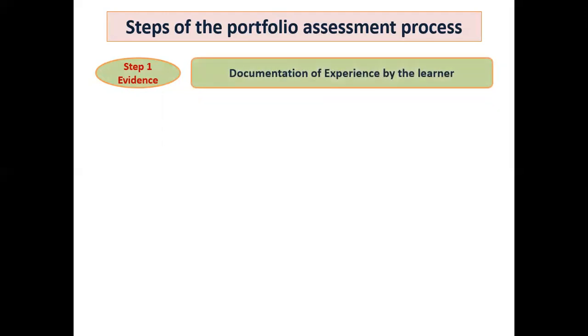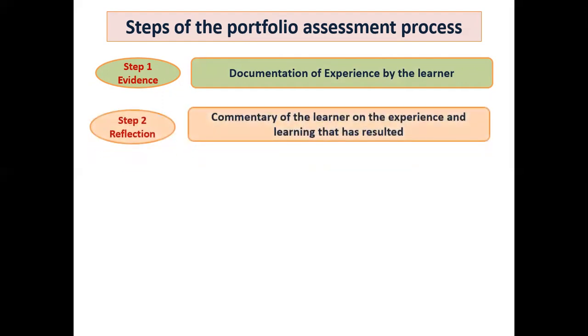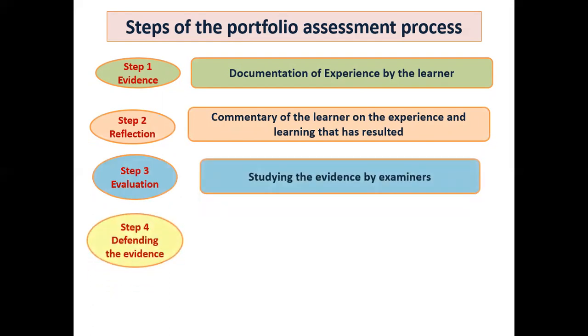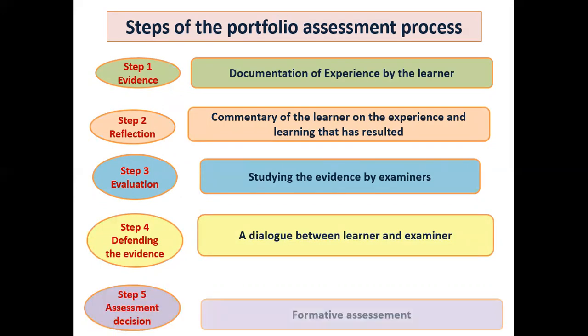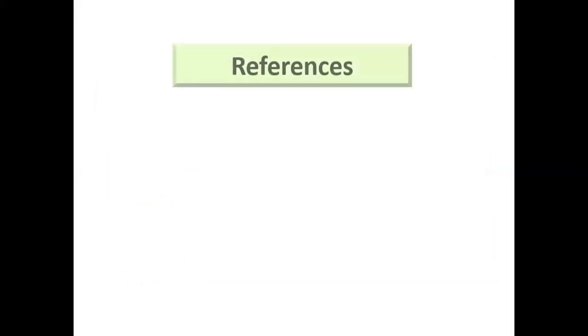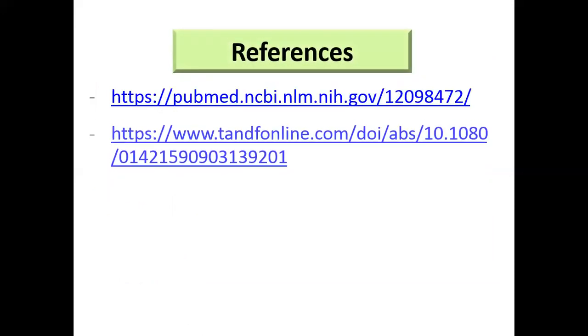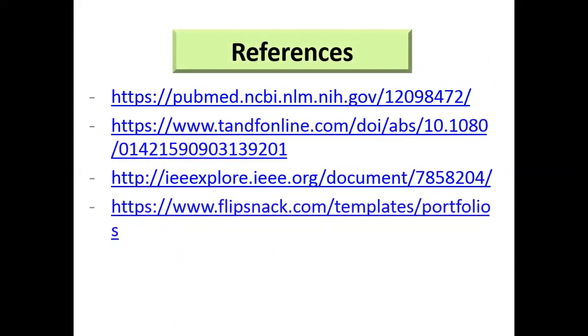What are the steps of the portfolio assessment process? Step one is the evidence. Step two is the reflection, comments by the learner on the experience learning process that has a result. Step three is evaluation, a studying of the evidence by the examiner. Step four is defending the evidence. Dialogue occurs between learner and examiner. Step five is the assessment decision.